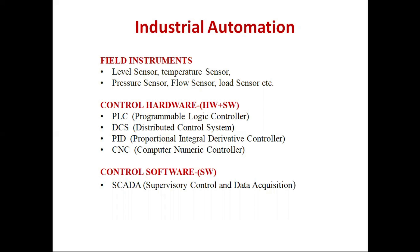These instruments act as the eyes of any process — they measure process parameters and give us feedback in the form of current or voltage, typically 4 to 20 milliampere or 0 to 10 volts. This signal then goes to the input of the PLC. The control hardware can be of different types like PLCs, DCS, PID controls, and CNC controls.